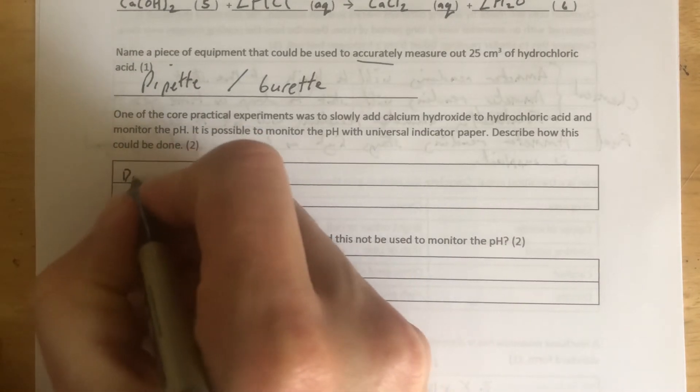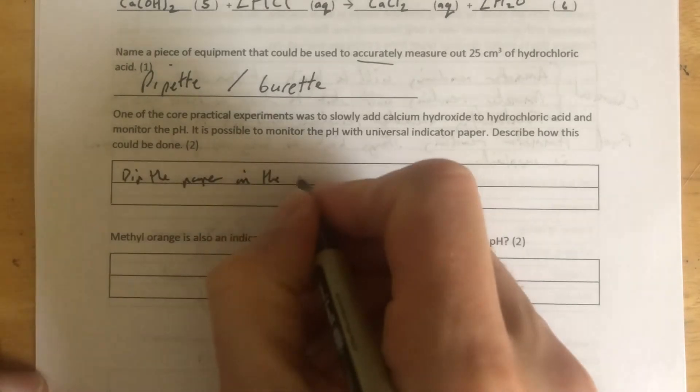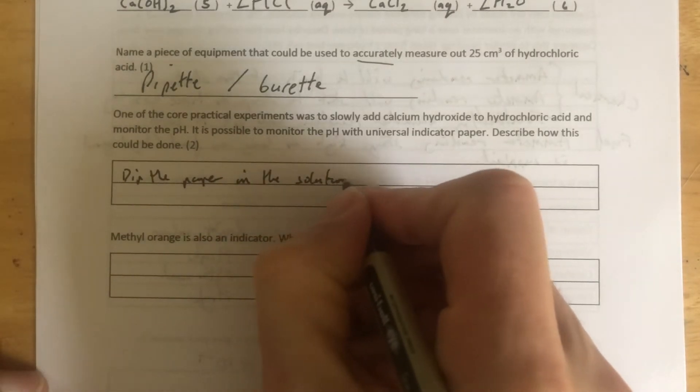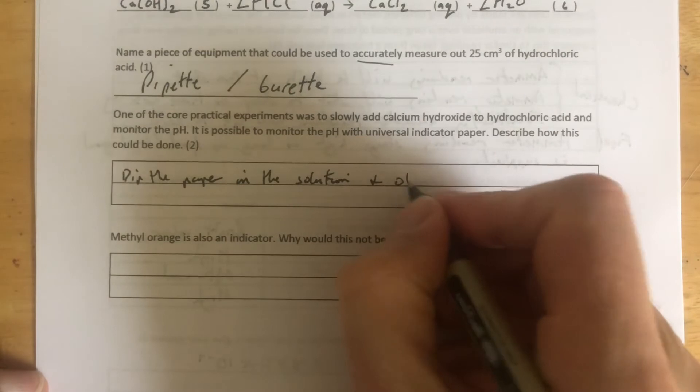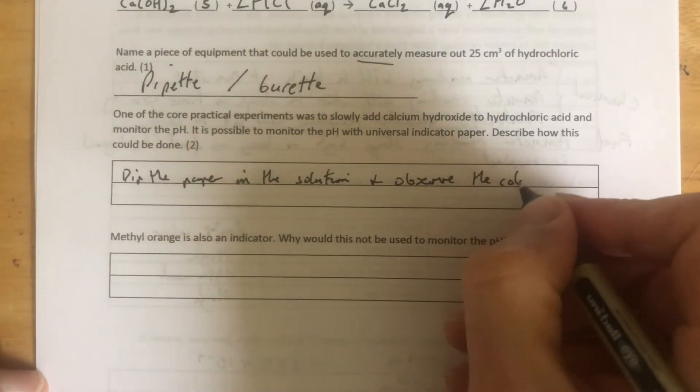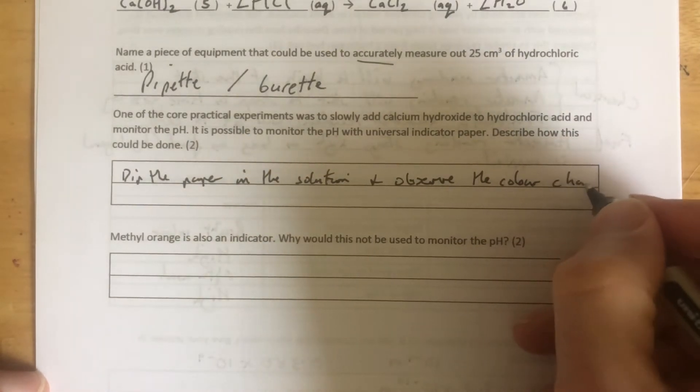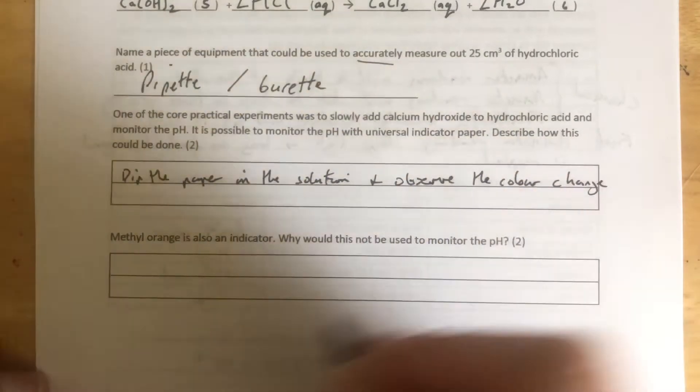So you're going to dip the paper in the solution and observe, and this is the important bit, the color change. Universal indicator changes color in acids and alkalis. So we're going to observe that color change—that's our first marking point.